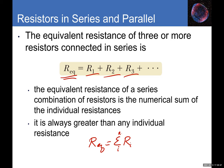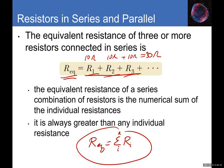For resistors in series, the equivalent resistance is always greater than any individual resistance — for example, three 10-ohm resistors in series give 30 ohms. This is opposite to capacitors, where series combination decreases the value. The equivalent resistance of a series combination is the numerical sum of the individual resistances and is always greater than any single resistor.